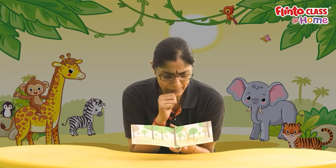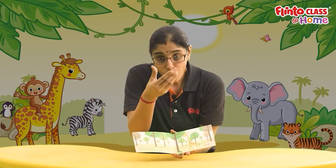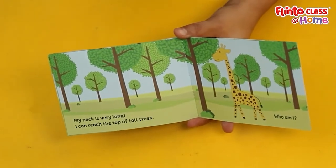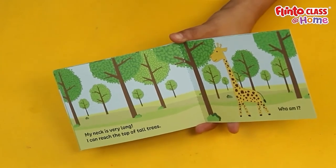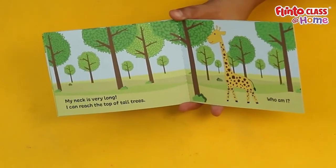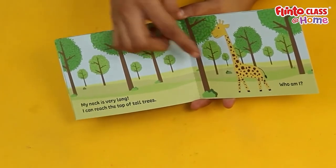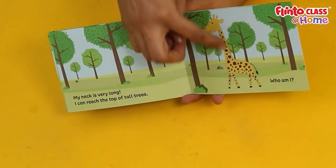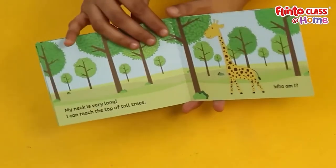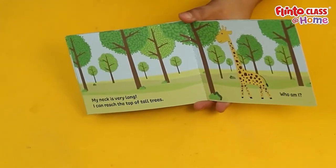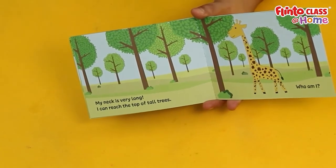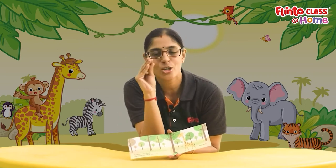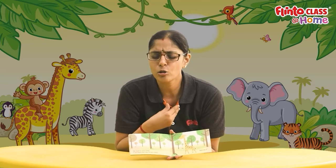This is a very cute animal — it's got a very long neck. Can you see the long neck? It's also got some brown patterns on its skin. This animal says: my neck is long, I can reach the top of all trees! It's got a long neck so it can reach the top of trees to munch on the leaves. Who is this cute animal with the long neck?